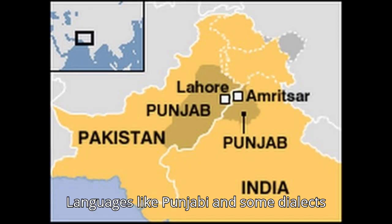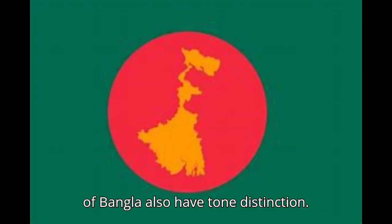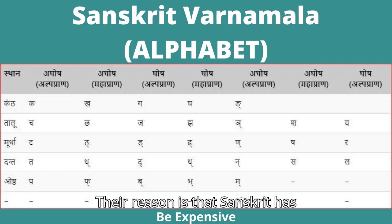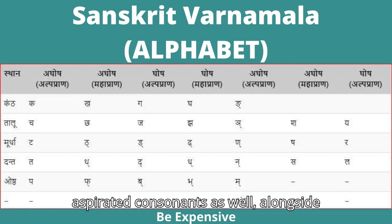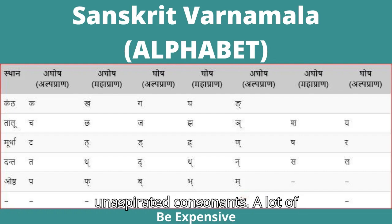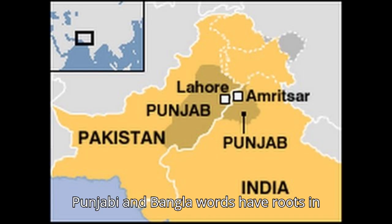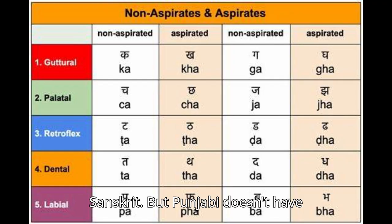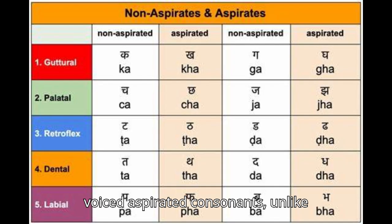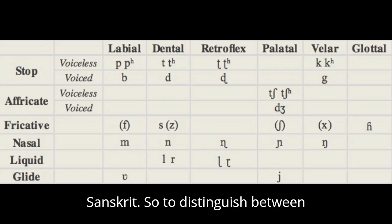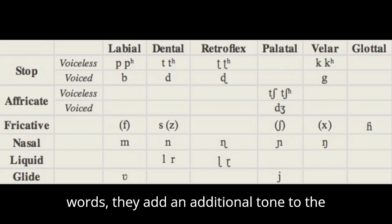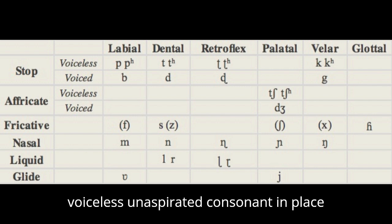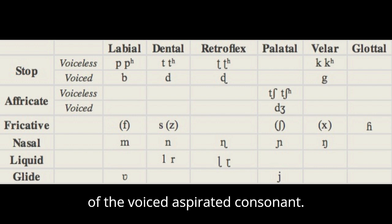Languages like Punjabi and some dialects of Bangla also have tone distinction. Sanskrit has both aspirated and unaspirated consonants, and a lot of Punjabi and Bangla words have roots in Sanskrit. But Punjabi doesn't have voiced aspirated consonants, unlike Sanskrit. So to distinguish between words, Punjabi adds an additional tone to the voiceless unaspirated consonant in place of the voiced aspirated consonant.